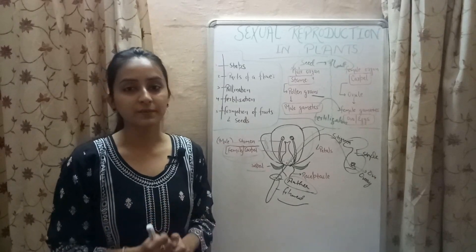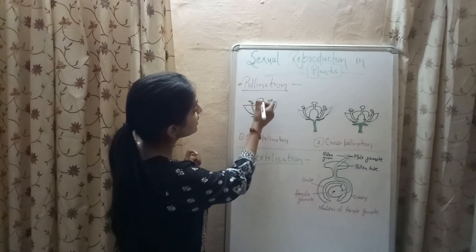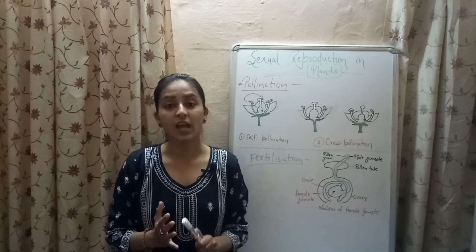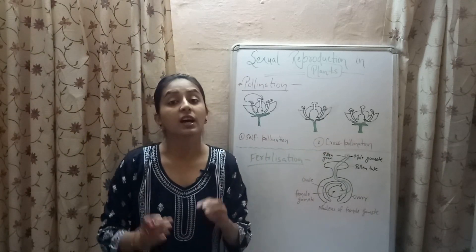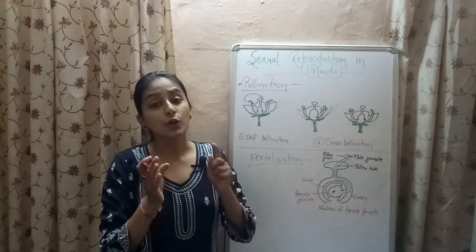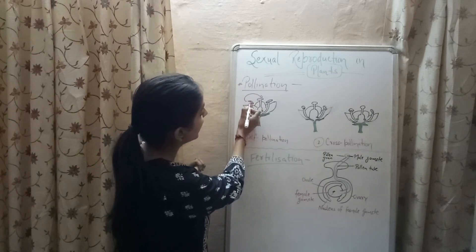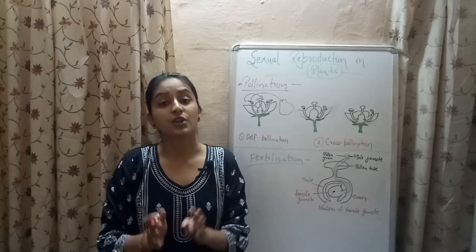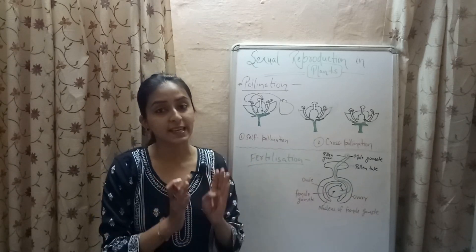So let's start with pollination. Pollination refers to the transfer of pollen grains from the anther part of the stamen to the stigma part of the carpel. Pollination occurs through various sources like insects, air, and water. There are two types of pollination: self-pollination and cross-pollination. In self-pollination, the transfer of pollen grains takes place from the anther of one flower to the stigma of the same flower, or from the anther of one flower to the stigma of another flower of the same plant.